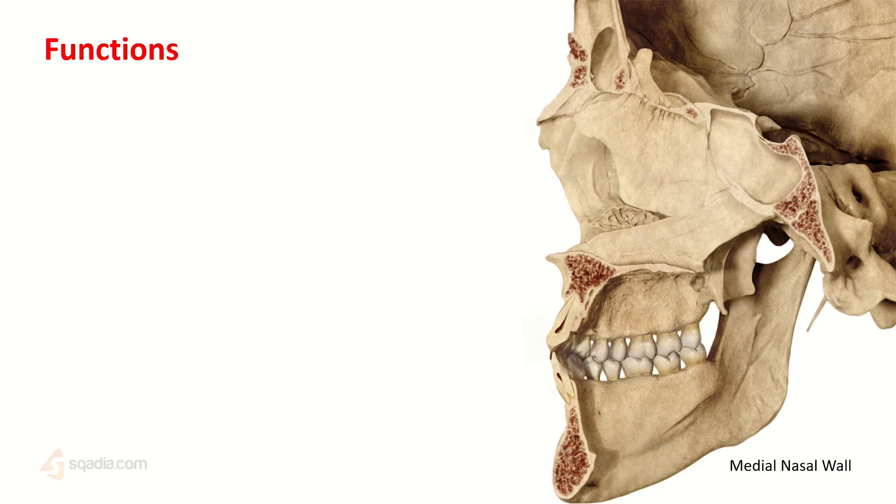So now let's go over the functions. The first important function is that it separates the right and left nasal cavities by acting as the nasal septum. So as I showed you before, here is an image where we can see it exactly in the midline. Here is the right nasal cavity behind this plate, and this solid arrow is showing the left nasal cavity.